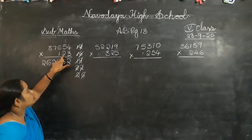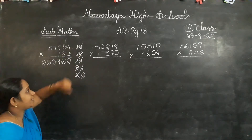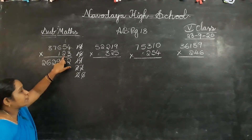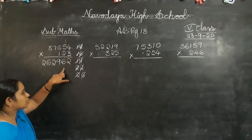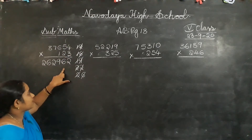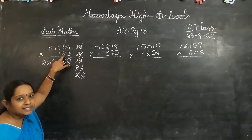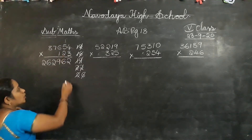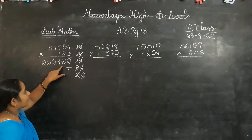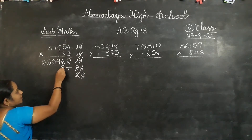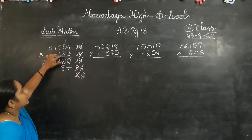2. 2 fours are 8. Where do you have to write? Because this is a 10's place digit, don't write under the 1's place. Write 8 under the 10's place. 2 fours are 8. Next.